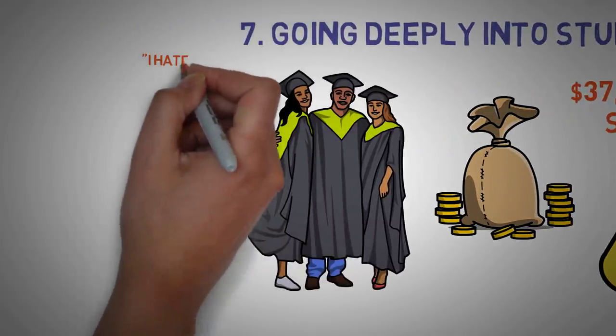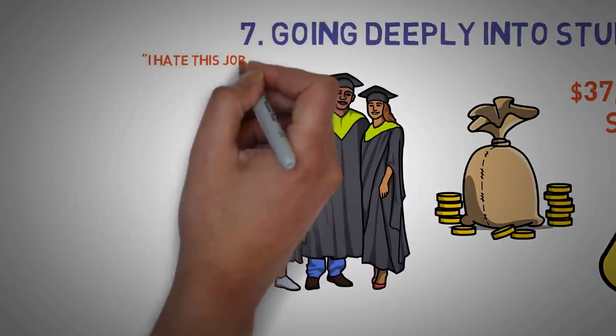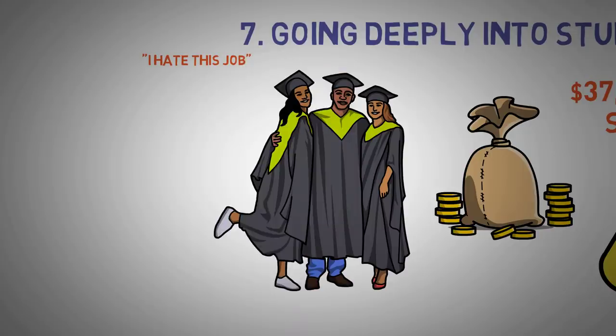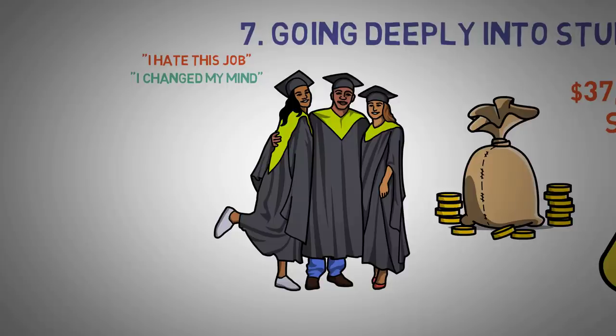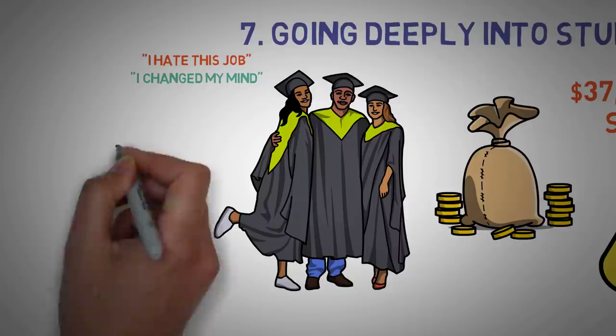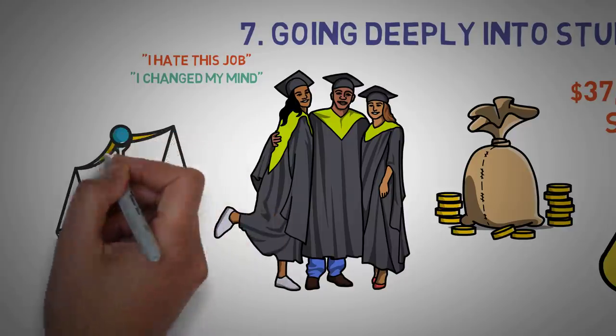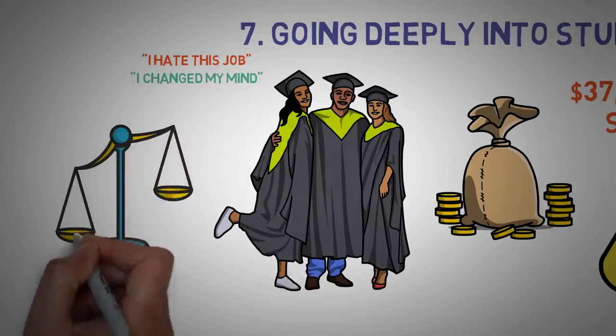One problem is that many students choose the wrong field. This could mean that they simply don't want to do the job that they studied for because they didn't understand the job's task or because they changed their mind about their career path. Many students don't do the proper research to thoroughly understand the cost of obtaining a degree and the salary they'll be earning upon graduation.